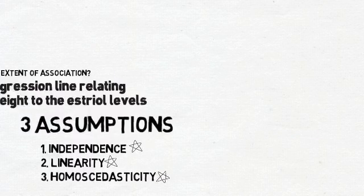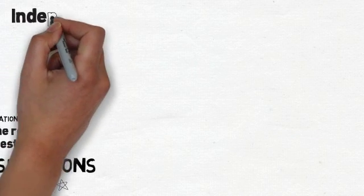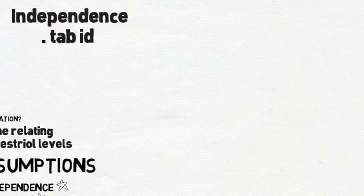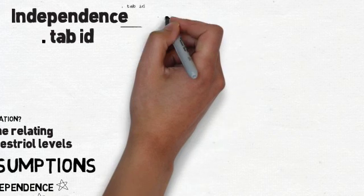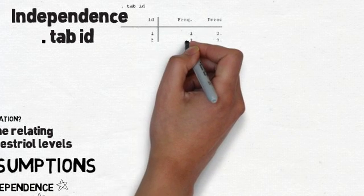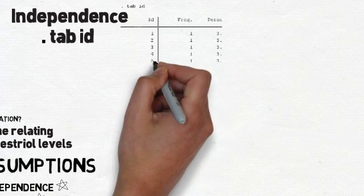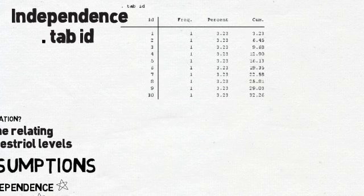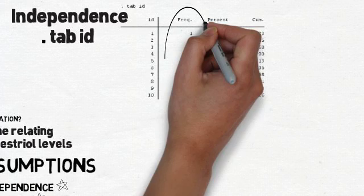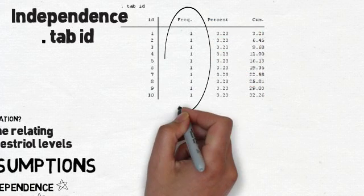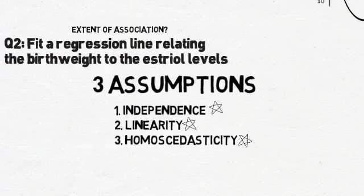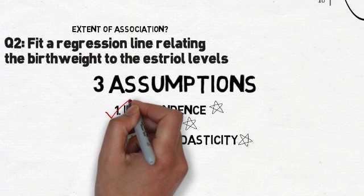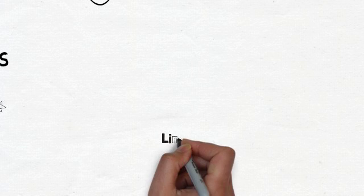The first assumption is independence of the variables. To check for independence, we use the Stata command 'tab ID'. In the frequency column, all values are 1 — there is only one observation per person — so the data meets the assumption for independence. If there had been more observations per person, the data would have been paired or matched, but that's definitely not the case here. One assumption down, two to go.